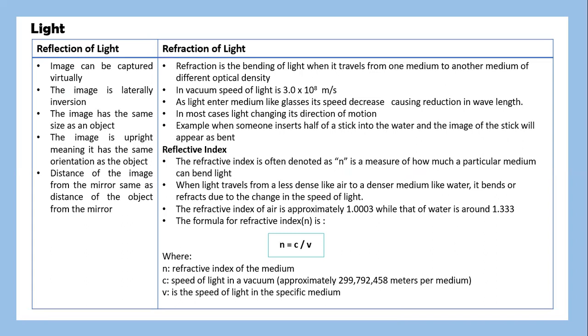Refractive index, often denoted as n, is a measure of how much a particular medium can bend light. When light travels from less dense air to a denser medium like water, it bends or refracts due to the change in the speed of light. The refractive index of air is approximately 1.0003, while that of water is around 1.333.